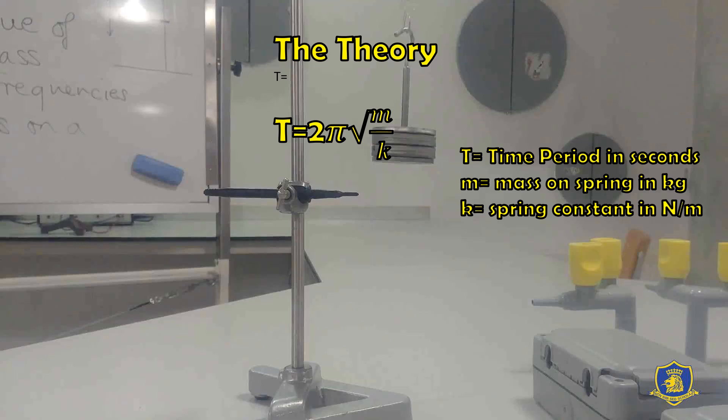As you saw in the previous video, the astronaut had a low frequency when he was on the device, meaning he had a high time period. When he was off the device, the frequency increased and therefore the time period was smaller. So you can relate the time period to the mass of the object on the device.